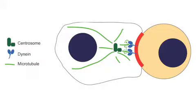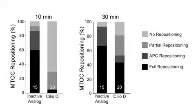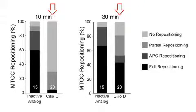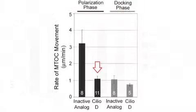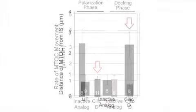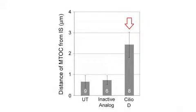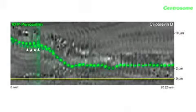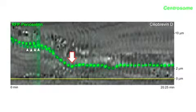Yee et al. reasoned that centrosome repositioning should be blocked by inhibitors of dynein and microtubule depolymerization. For dynein, they used a new small molecule membrane-permeant inhibitor of cytoplasmic dynein called ciliobrevin. They found a dramatic reduction in the efficiency of centrosome repositioning, a three-fold reduction in the rate at which the centrosome approaches the synapse, and a complete block in the docking phase — it comes over very slowly, and when it gets about two microns from the synaptic membrane, it completely stalls and progresses no further.